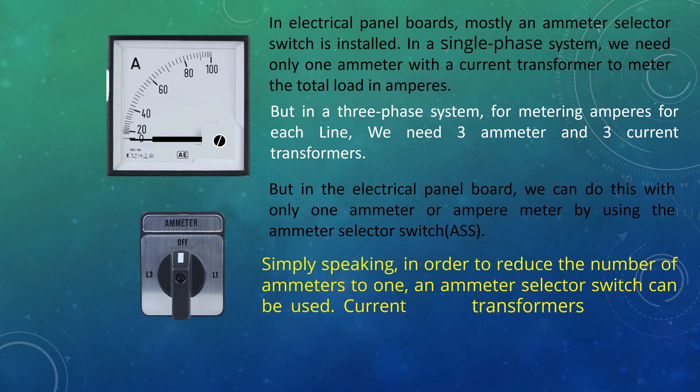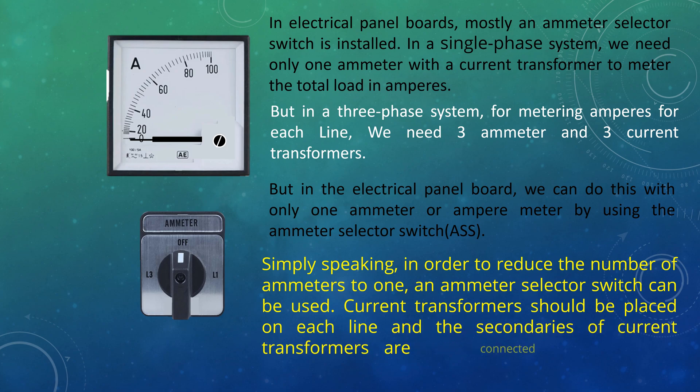Current transformers should be placed on each line, and the secondaries of the current transformers are connected to the ampere selector switch and then to the ammeter.